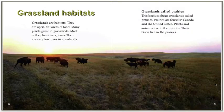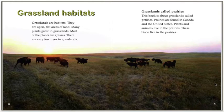Let's keep reading. Grassland habitats. Grasslands are habitats — they are open, flat areas of land. Many plants grow in grasslands and most of the plants are grasses. There are very few trees in grasslands. This book is about grasslands called prairies. Prairies are found in Canada and the United States. Plants and animals live in the prairies, like these bison.